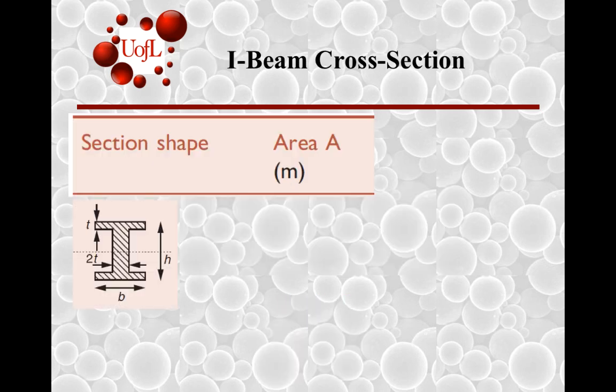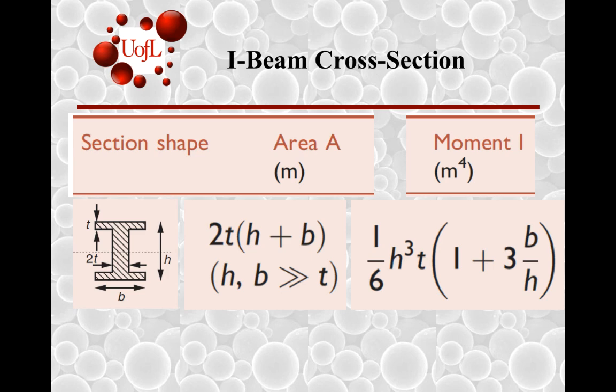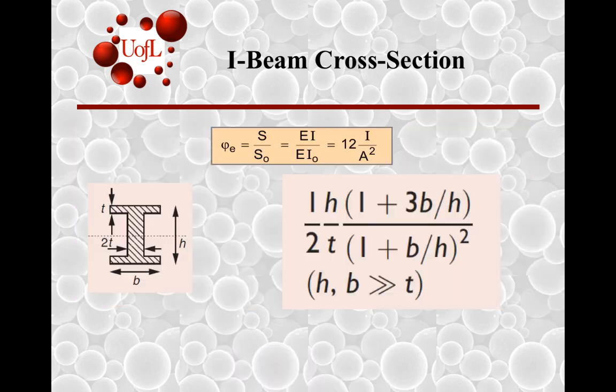What about an I-beam, which you come across quite regularly? The thickness at the top and bottom of the I is t, the width across these two regions is 2t, the height is h, and this is b. The area is 2t times (h + b). One way to see why this is similar to a hollow rectangular box is that you can basically take a thickness t and move it to either side towards the end, and you'll get the same area and similarly the same moment of inertia. Then the shape efficiency factor should be identical to what you had for the rectangular box.